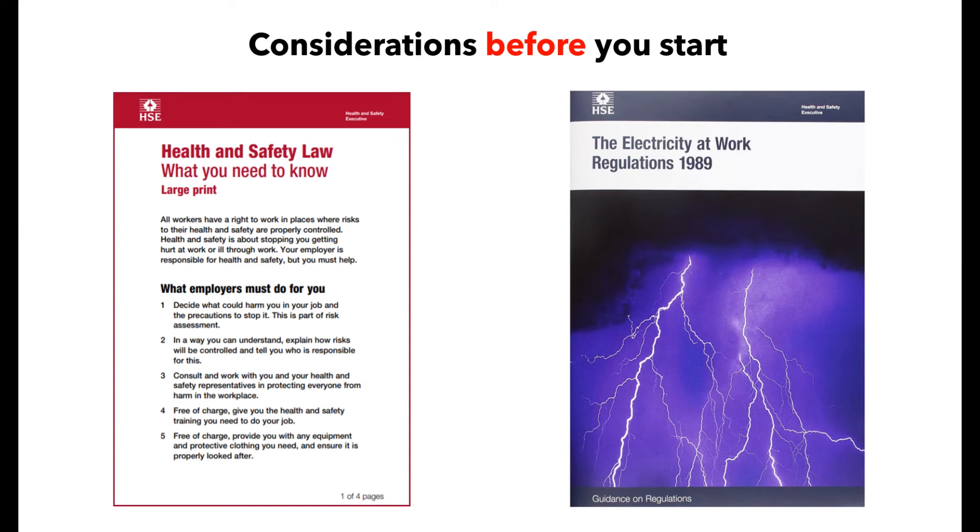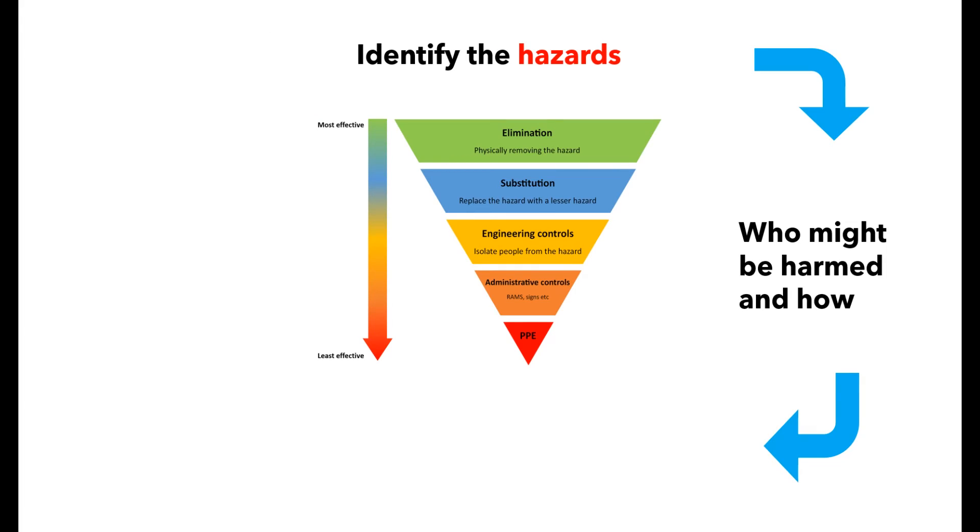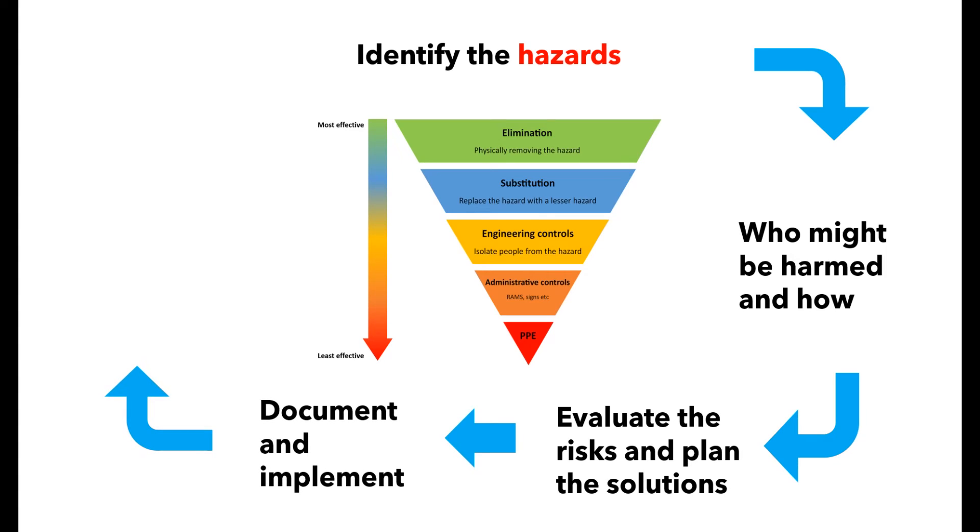So let's consider some health and safety considerations as well as some electricity at work regulations 1989. Before we start anything, the first thing we do in any situation is a risk assessment. Identify the hazards, who might be harmed and how. Evaluate the risks and plan the solutions, because prevention is always better than cure. Document and implement those rams, and then don't forget that a risk assessment is a living document and needs to change whenever a new hazard is introduced or the current assessment changes. This could be something as simple as another tradesperson walking in the vicinity, which means we need to continually assess the hazards around us and change the risk assessment accordingly.